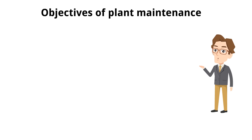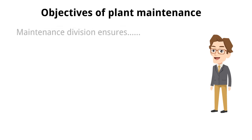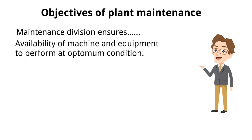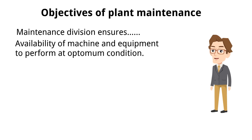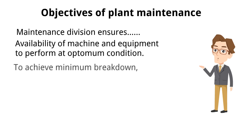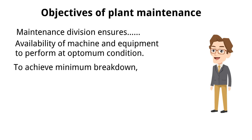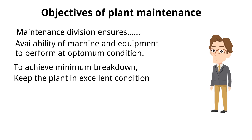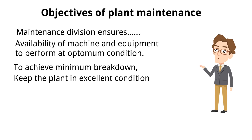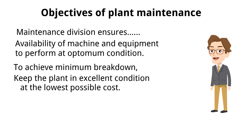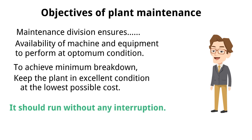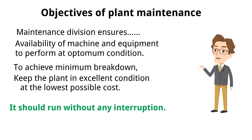Objective of plant maintenance. The maintenance division of the factory ensures the availability of machines and equipment to perform their function at optimum conditions. The objective of the plant maintenance division is to achieve minimum breakdown and to keep the plant in excellent condition at the lowest possible cost, keeping the plant in such condition that it should run without any interruption.